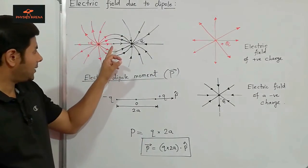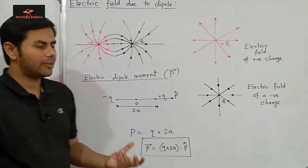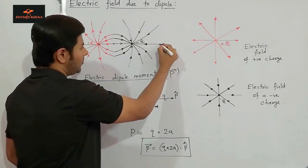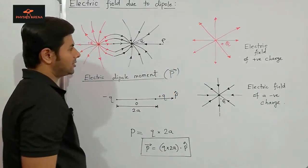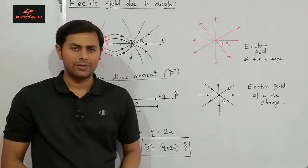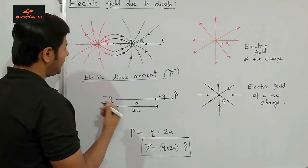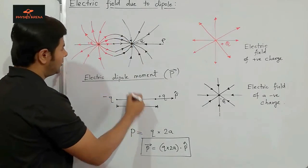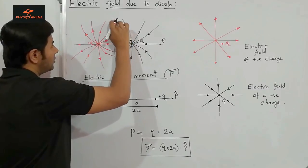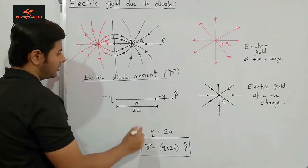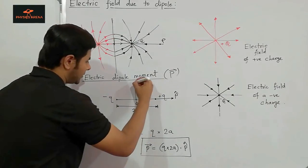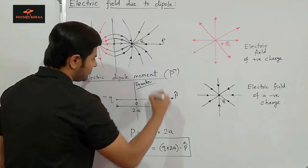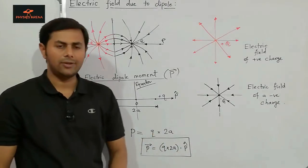Now we will find out the electric field due to this dipole at two specific points. The first is the axial point — the line joining the two charges is called the axis, so we will find the electric field somewhere on the axis. The second is the equatorial point — the equator is a perpendicular line to the axis which passes through the center O. We will find the electric field at both the axial point and the equatorial point.